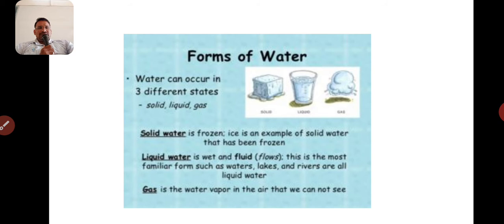Gas is the water vapor in the air that we cannot see. Whenever the water vapor goes into the sky with the help of heat or sun heat, we cannot see the water vapor, but it is the gas form of water.